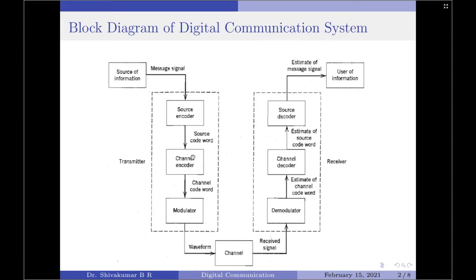Moving on to the channel encoder. In channel coding, the objective is for the encoder to map the incoming digital signal into a channel input and for the decoder to map the channel output into an output digital signal in such a way that the effect of channel noise is minimized. The output of the channel encoder is called a channel codeword. The combined role of channel encoder and decoder provides for reliable communication over a noisy channel. This is satisfied by introducing redundancy in a prescribed fashion in the channel encoder and exploiting it in the decoder to reconstruct the original encoder input as accurately as possible. Thus, in source coding we remove redundancy whereas in channel coding we introduce controlled redundancy.